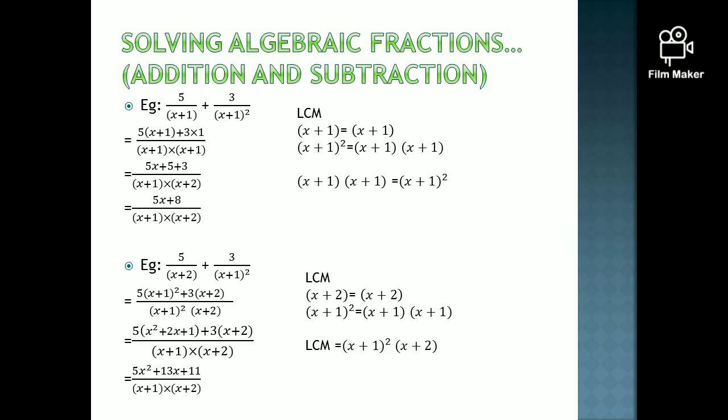The next question is to simplify 5x over x plus 2 plus 3 over x plus 1 squared. The LCM would be x plus 1 squared into x plus 2. For the first term, cover x plus 2 from the LCM — the remaining is x plus 1 squared. So 5x into x plus 1 squared. Plus 3 into — cover x plus 1 squared, the remaining is x plus 2. So 3 into x plus 2. Expand: 5x times x squared plus 2x plus 1 plus 3 times x plus 2. Simplify to obtain 5x squared plus 13x plus 11 over x plus 1 squared into x plus 2.